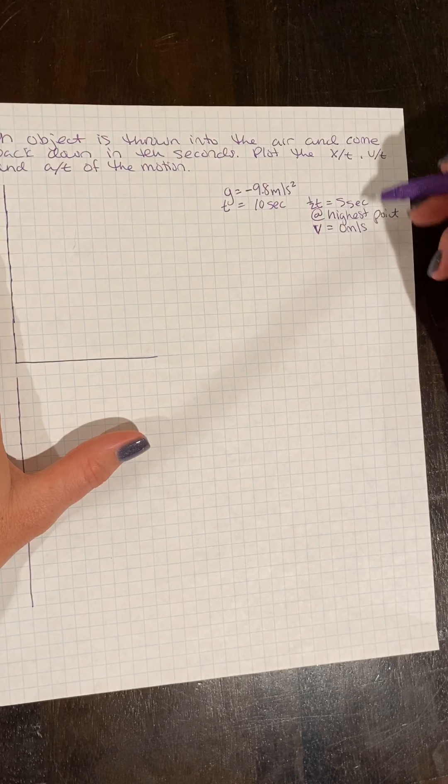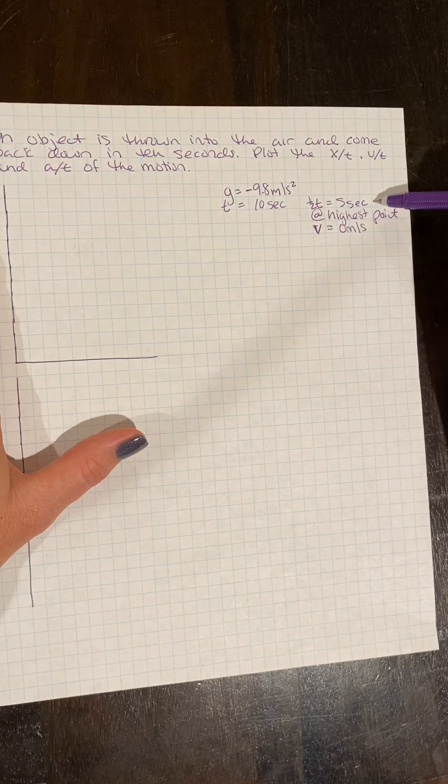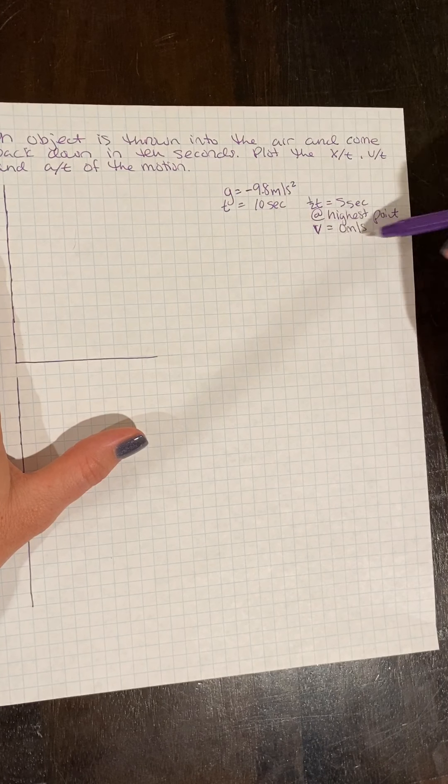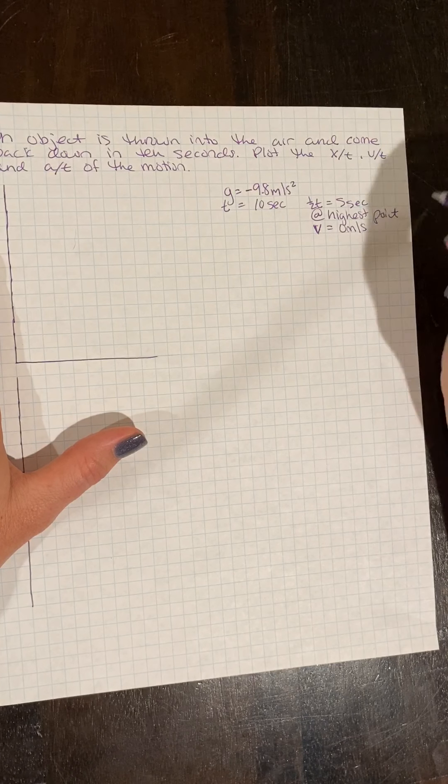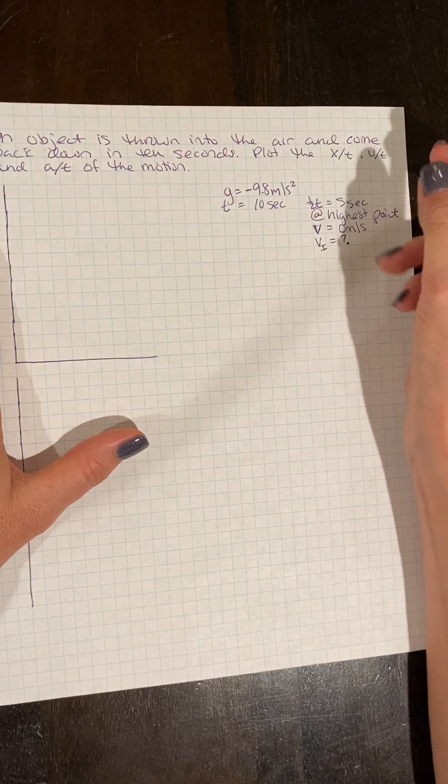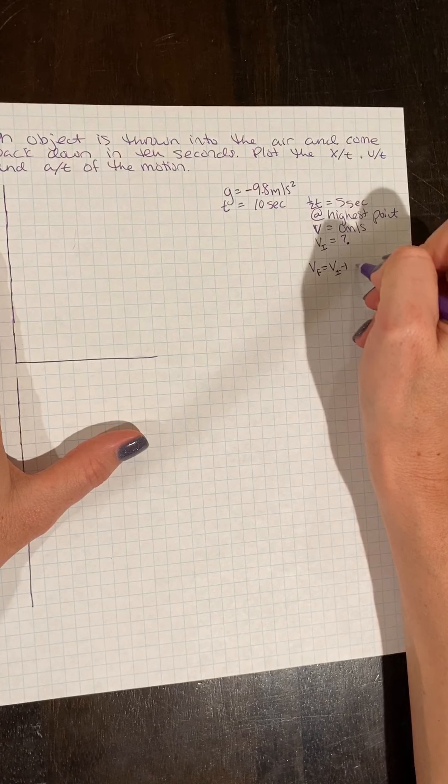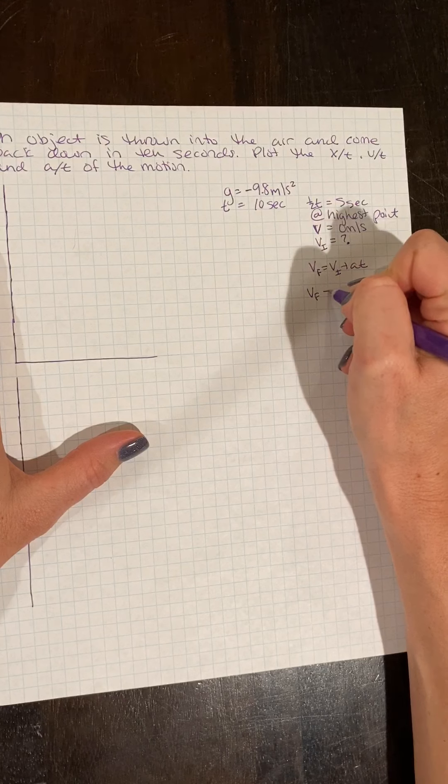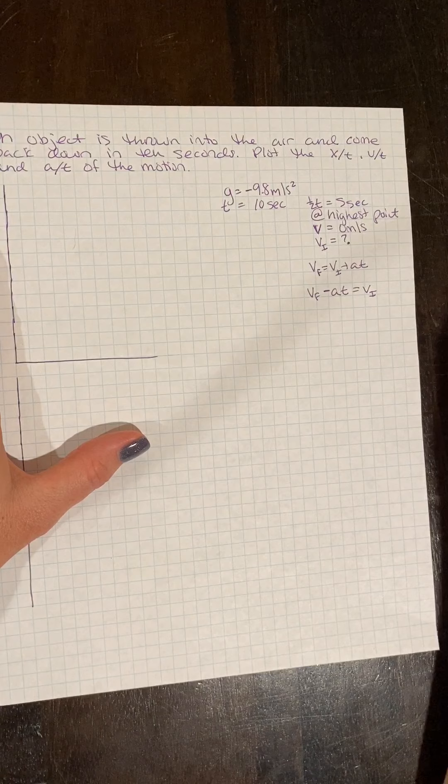So sticking with half the flight time, we can use our acceleration, our time of five seconds on the way up, and our velocity at our highest point, our final velocity at the highest point, to figure out what our initial velocity is. We would use the first kinematic to solve for our initial velocity. It's our final velocity minus acceleration times time, and gives me my initial velocity.